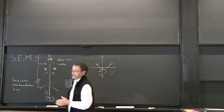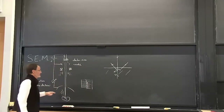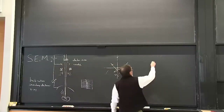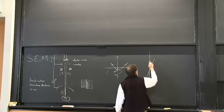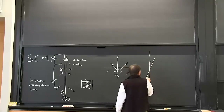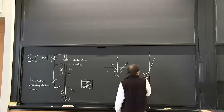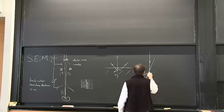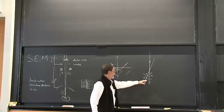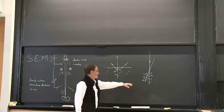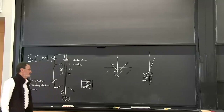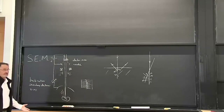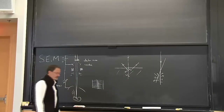Why gold? Because it doesn't outgas - this whole thing has to be done in vacuum. That's what we have in the vertical situation. Now, imagine that we have a highly inclined surface element. Many more of the electrons are going to escape because they're generated closer to the surface. That means the current we measure will be higher when we're dealing with a surface that's inclined. That's the mechanism for turning surface orientation into brightness, and our job is to invert that.